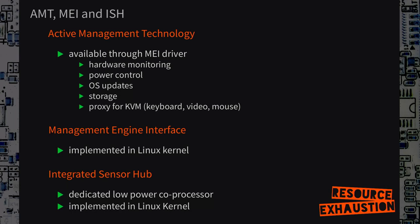Here are some ME features summarized. The Active Management Technology is implemented in the Linux kernel — there is a driver for it. It can do hardware monitoring, like detecting if chips are overheating, and can have other sensors connected. It can do power control — just like a BMC, you can power cycle your system through it. You could update your operating system out-of-band — not via apt-get upgrade, but externally — reformatting an entire disk and replacing it with a new image. There is some storage, and even a proxy for keyboard, mouse, and video interface. It's like VNC, literally. That's what we know from public documentation.